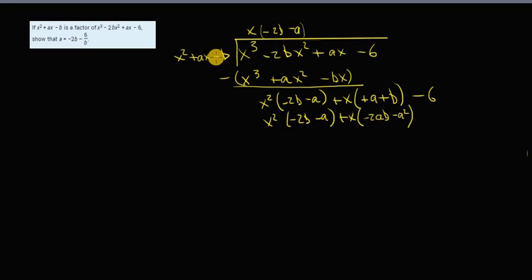And then this, by (-b), is going to give me - well, (-b) by (-2b) is going to give me +2b². And (-b) by (-a) is going to give me +ab.